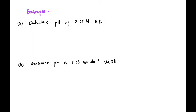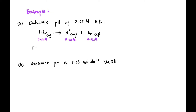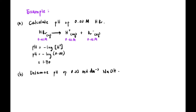Example: Calculate the pH of 0.02 M HBr. Step 1: HBr → H⁺ + Br⁻. Since it is a strong acid, [H⁺] = [HBr] = 0.02 M. pH = -log(0.02) = 1.70.